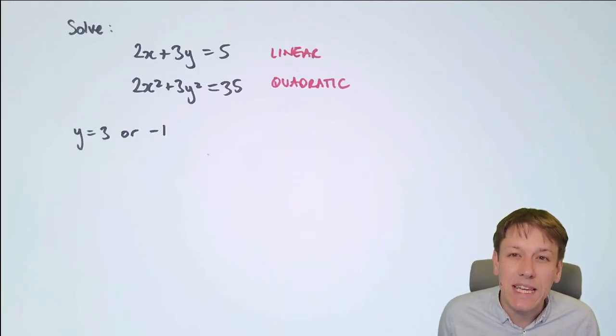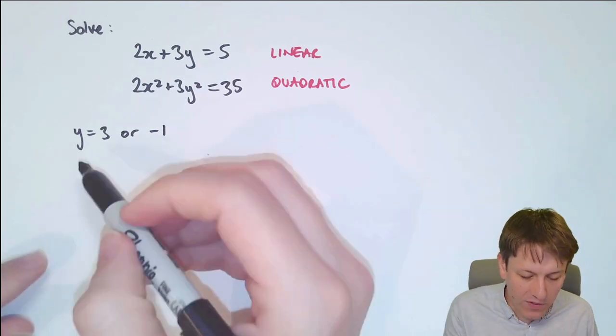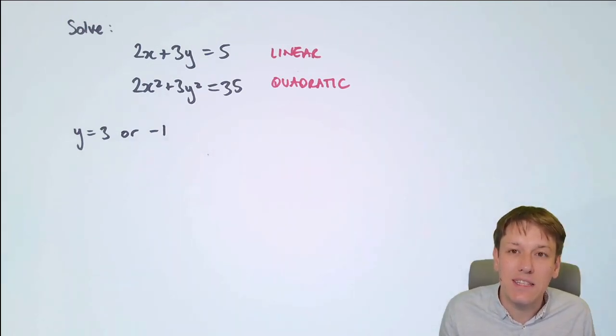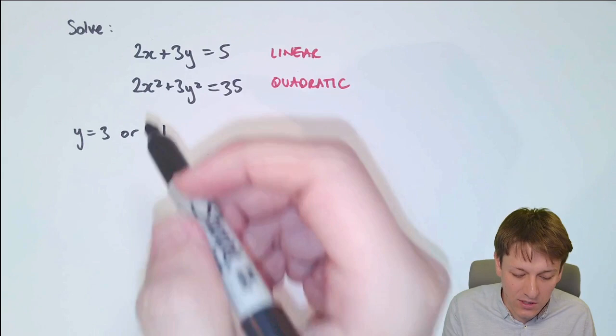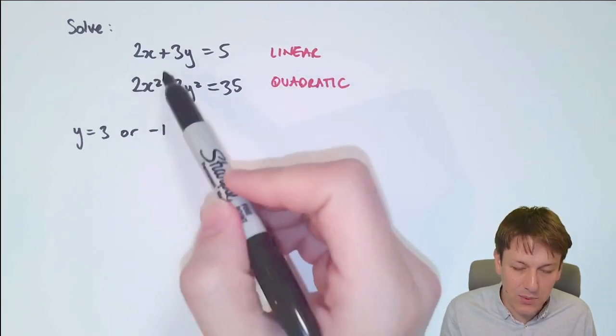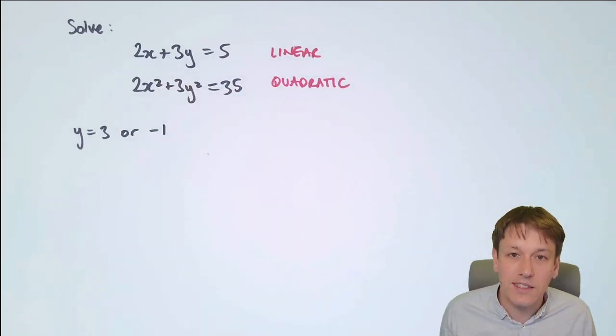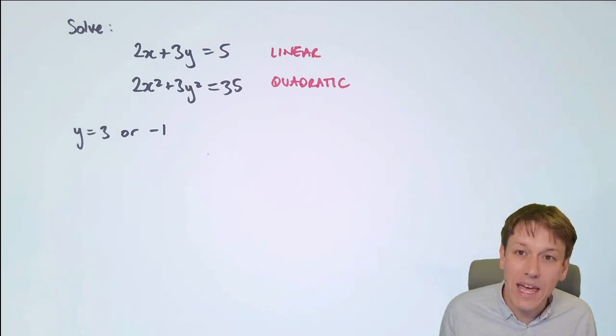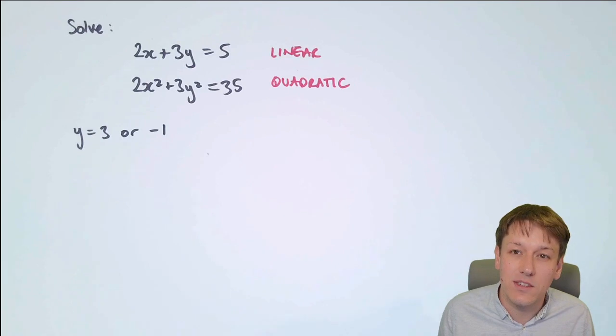This next point is where you've got to be really careful in this linear and quadratic case, and it's a bit different to the easier case where both are linear. We've got to substitute these y values back in to find the corresponding values of x, because solutions to simultaneous equations are pairs of values, here x and y, where when you substitute them both in they satisfy these equations. But for the linear and quadratic case, it really matters which one you substitute back into, and we have to substitute into the linear one to make this work.